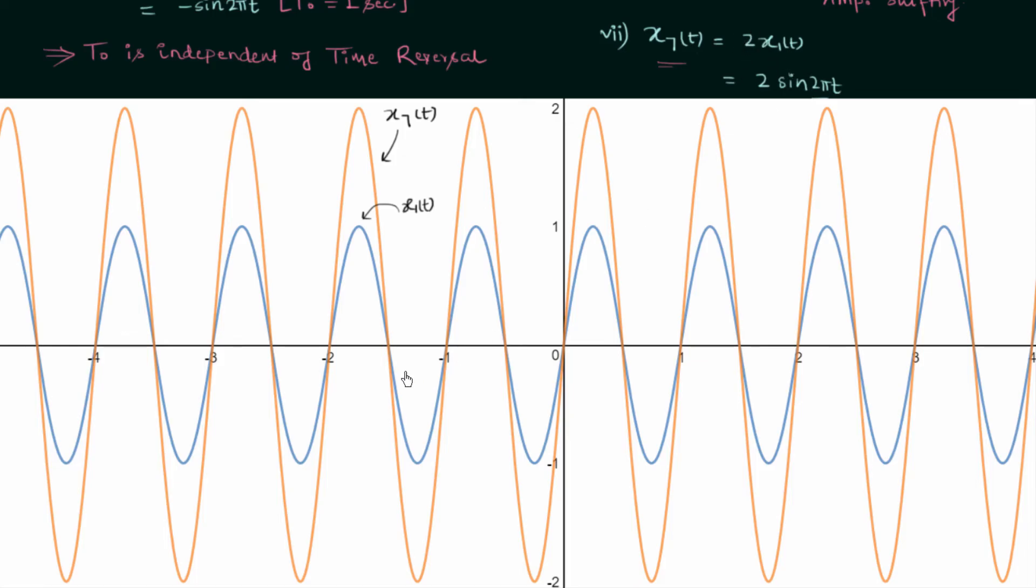But in case of fundamental time period there is no change. The fundamental time period in both cases is equal to 1 second. T0 is equal to 1 second and the fundamental time period is the same because we have simply increased the amplitude of the signal by multiplying 2. And if you multiply a number which is less than 1 then the amplitude will reduce but there will be no change in the fundamental time period.